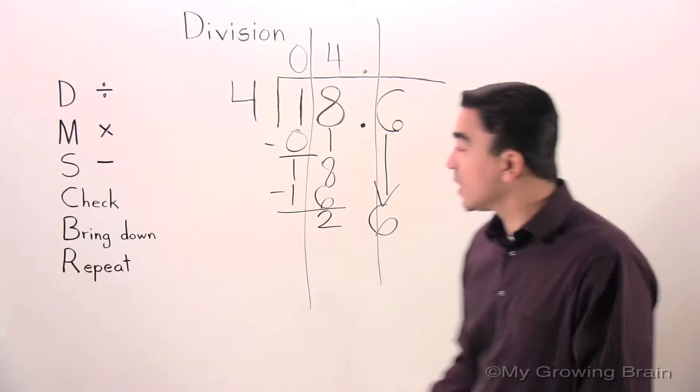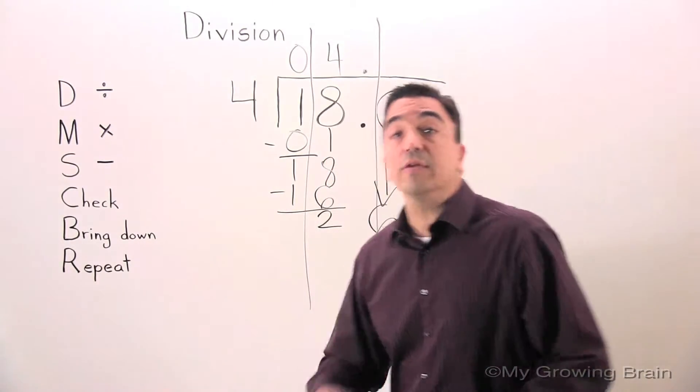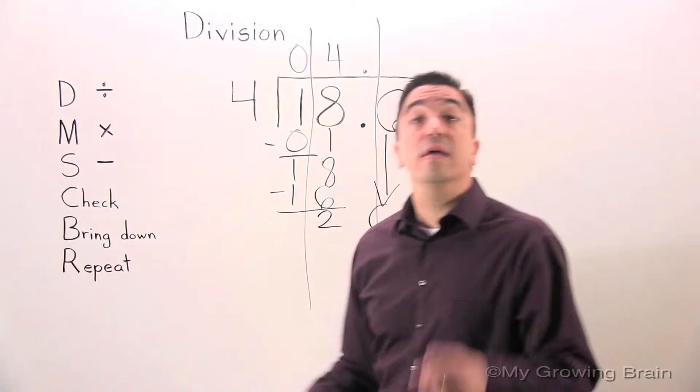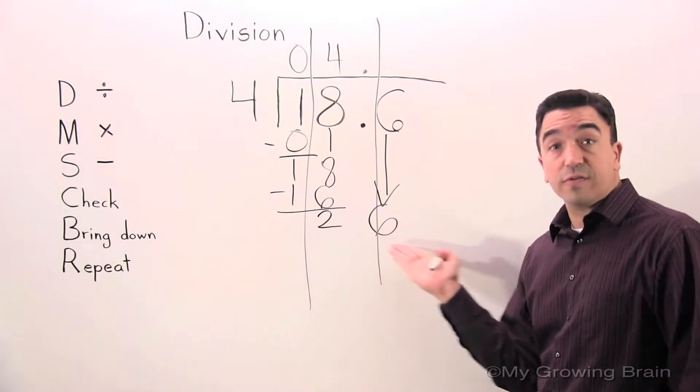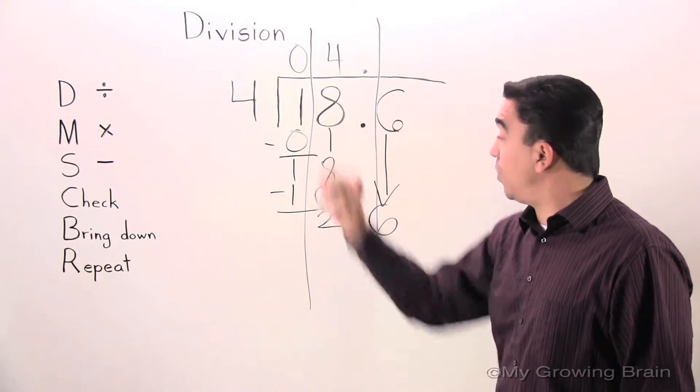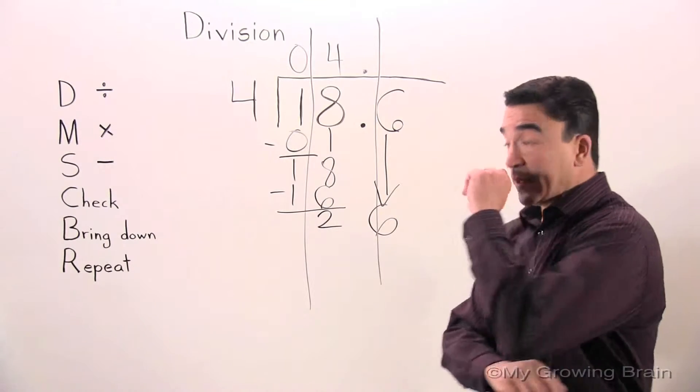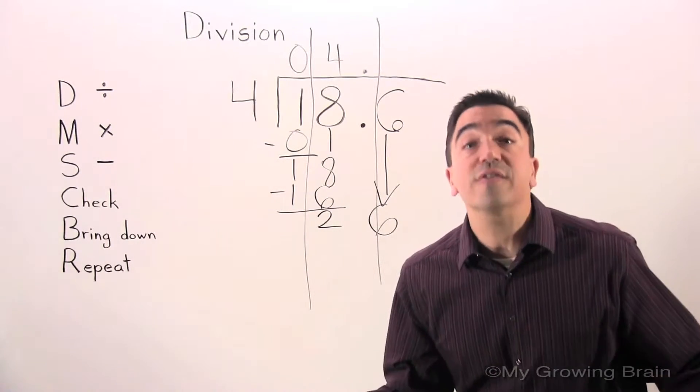26. Next step: repeat. Repeat the process. Back to the top. Divide. 26 divided by 4. 4 goes into 26 six times.